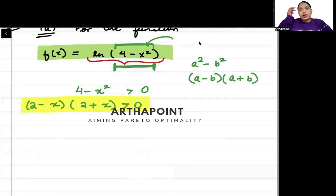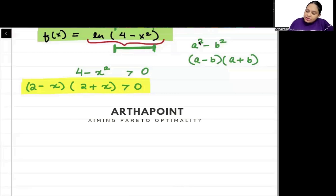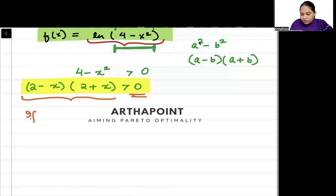From the chapter on inequalities, we know that the product of two things is positive if both are positive or both are negative. Negative times negative is positive, positive times positive is positive.